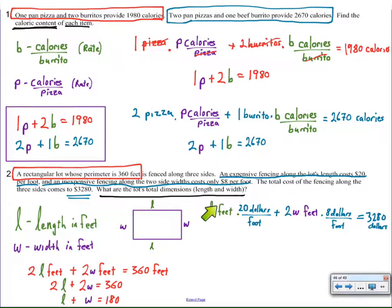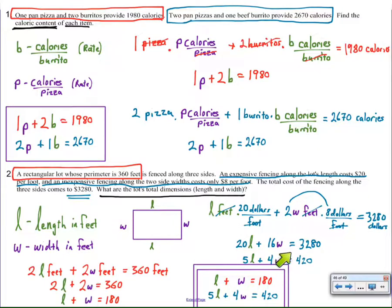Because this is $20 per foot, and then we have times the length in feet is going to give us dollars. We have $8 per foot times feet is going to give us dollars as well. Now keep in mind, we're only fencing one side of the expensive side, so that's one L. We're fencing in two of the W's at $8 per foot, so 2 times W times 8 is 16W.